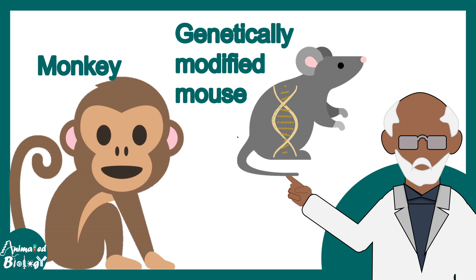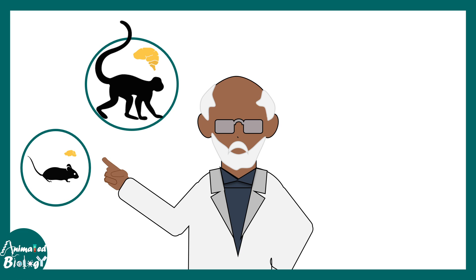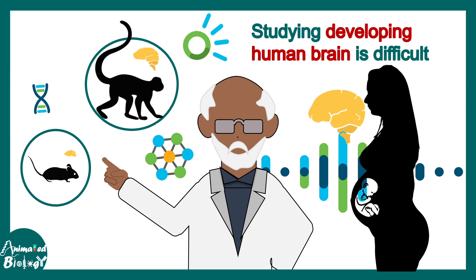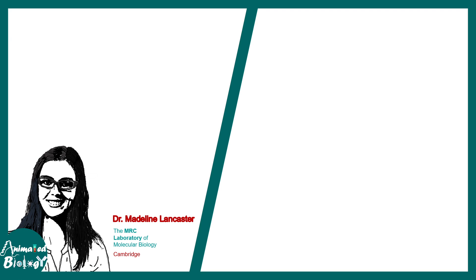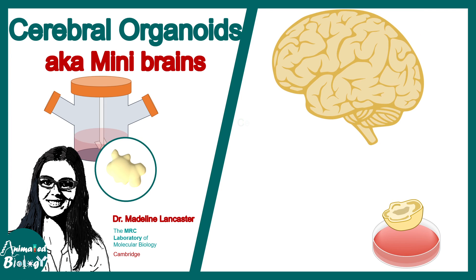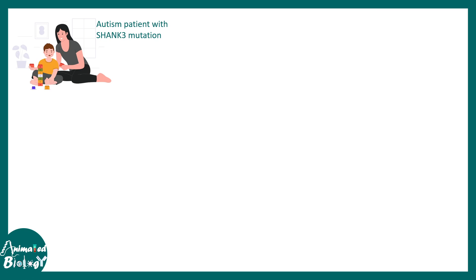Studying the development of a human brain is not an easy task. Scientists use genetically modified mice, monkeys, and other models that partially recapitulate human brain development. Since human brain development occurs inside the mother's womb, studying it is literally impossible due to ethical and technical constraints. In recent years, scientists at Cambridge developed a technique known as cerebral organoids, which recapitulate the cellular and molecular basis of human brain development. Using these as a model, scientists found many new insights about autism progression.